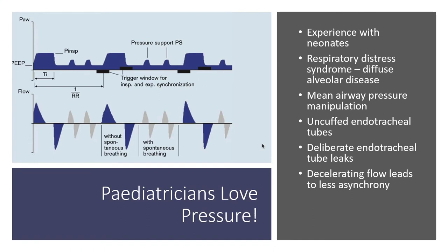Pediatricians and neonatologists love the pressure modes of ventilation, and with good reason. The problem with respiratory distress syndrome — a diffuse alveolar disease — is that you have very stiff lungs, requiring you to manipulate the mean airway pressure to get adequate oxygenation. That, coupled with the expected leak around the endotracheal tube, means that volume ventilation probably isn't always best for these patients.